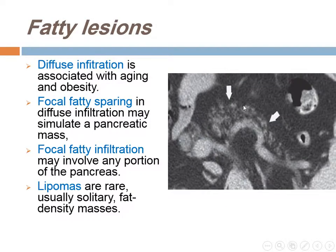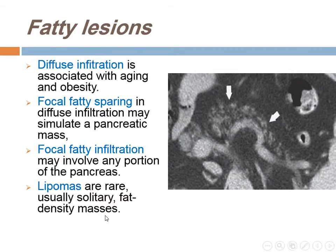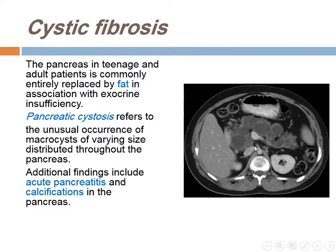Fatty lesions of the pancreas: either we have diffuse infiltration, which appears as a feathery appearance because the pancreas is encapsulated, or focal fat infiltration that mimics a pancreatic mass. Lipomas are rare and appear as a solitary fat density mass. Cystic fibrosis may present with fat infiltration of the pancreas, pancreatic cystosis with multiple cysts of varying size distributed throughout the pancreas, or sometimes acute pancreatitis and calcification.